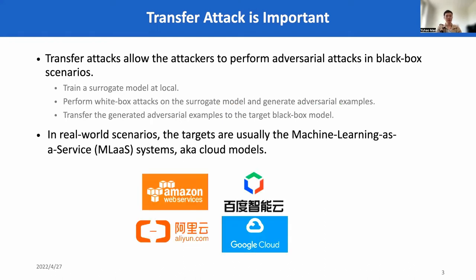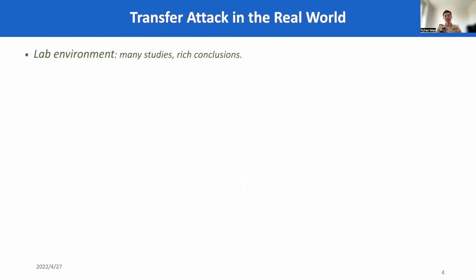In a real-world transfer attack, the targets are usually the cloud models such as Amazon, Baidu, Ali, and Google.